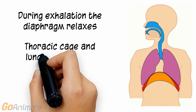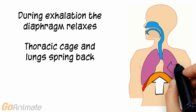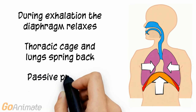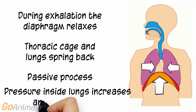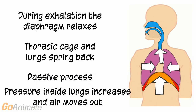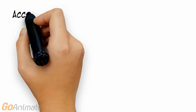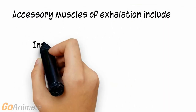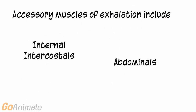During exhalation, the diaphragm and thoracic cage spring back to their original position. This is considered a passive process since no additional energy is used. The pressure inside of the lungs increases and air moves out. Some additional muscles involved in forceful exhalation include the internal intercostals and abdominals.